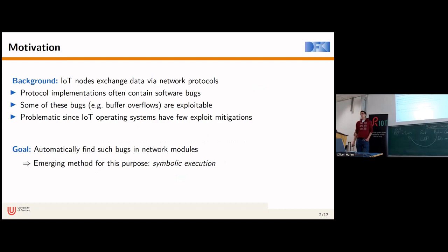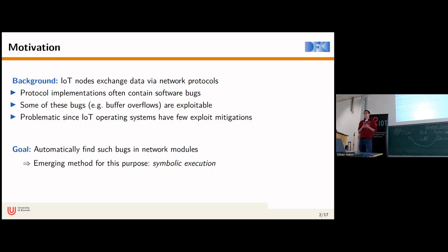As you all know, we have Internet of Things nodes that exchange data via standardized network protocols. Unfortunately, some of these protocols like CoAP or MQTT have quite some inherent complexity. Because of this complexity, protocol implementations often contain software bugs.